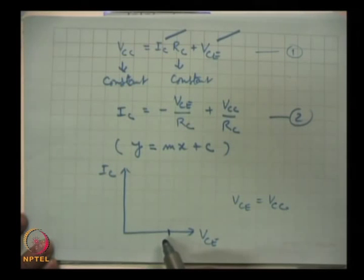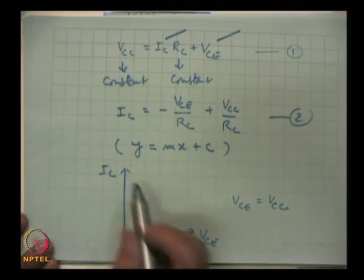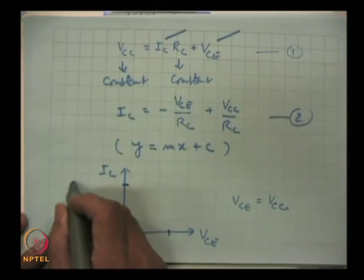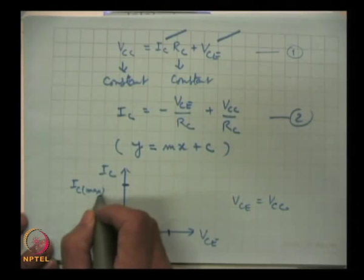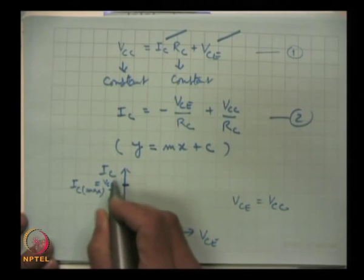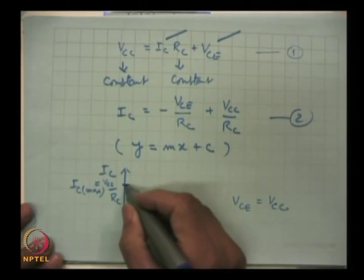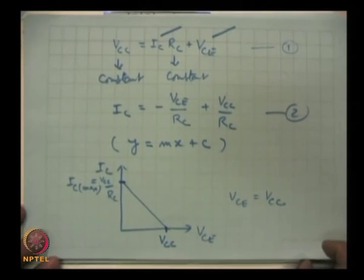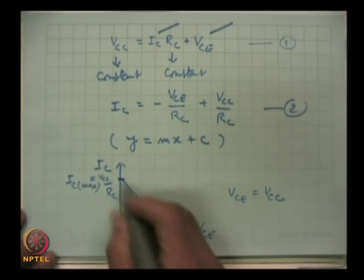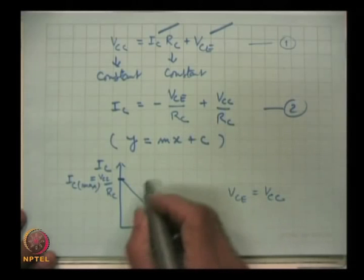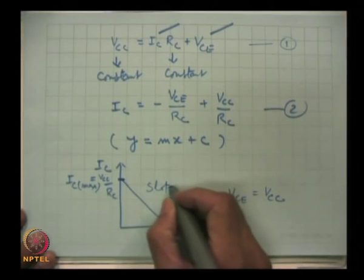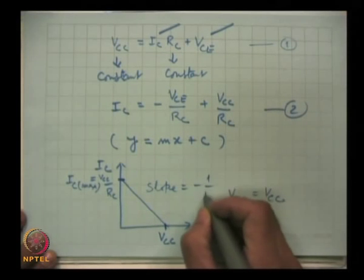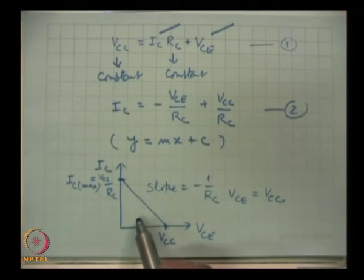The maximum collector current I_C(max) equals V_CC / R_C. Connecting these two points gives the load line. The slope of this line is −1/R_C. This becomes a useful line when drawn over the output characteristics of the transistor.